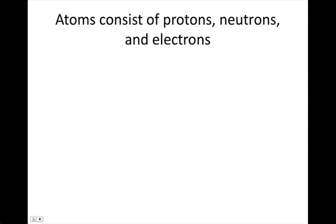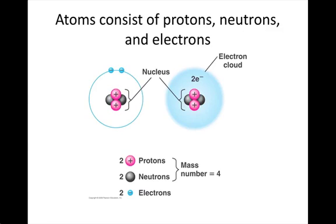Atoms consist of protons, neutrons, and electrons. Protons and neutrons are located at the center and known collectively as the nucleus. Protons are positively charged particles, and neutrons have no electrical charges.